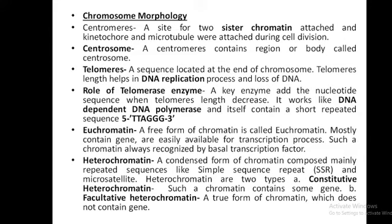Euchromatin — a free form of chromatin is called euchromatin. It mostly contains genes that are easily available for the transcription process. Such chromatin is always recognized by basal transcription factors.